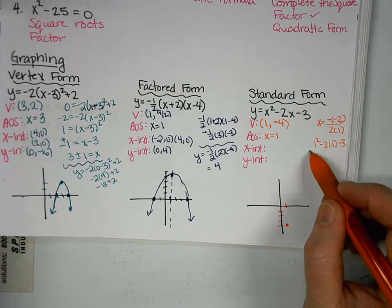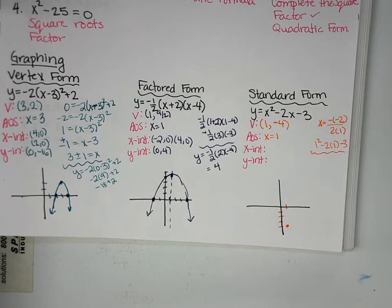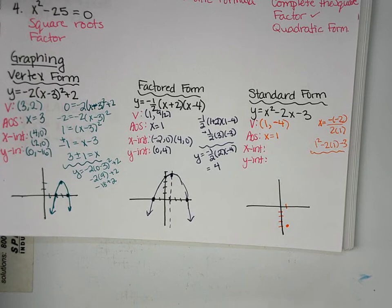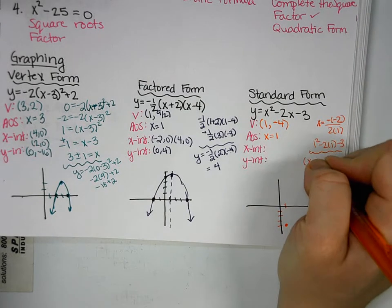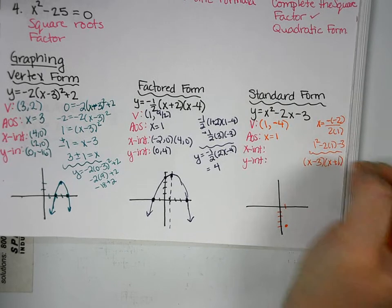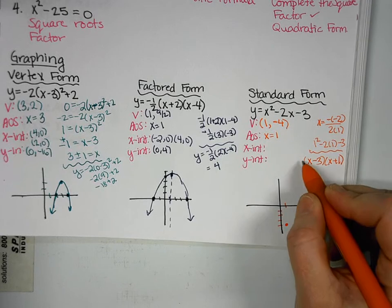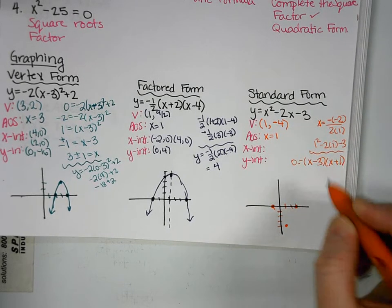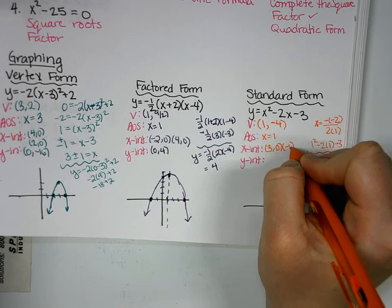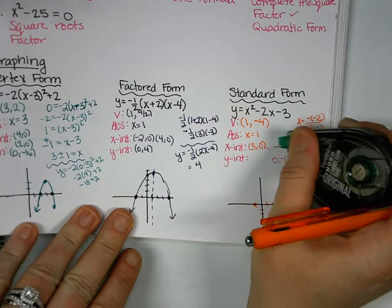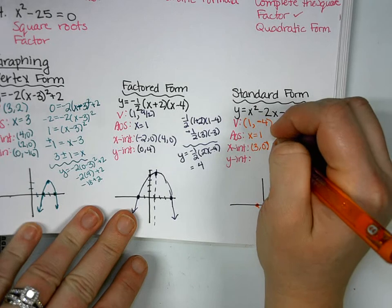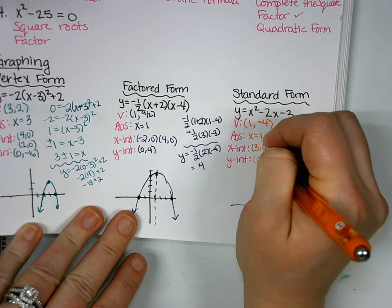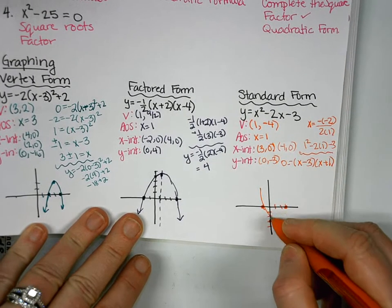Now for the x-intercepts, this is where we choose our method because it's up to us. We could factor it. We could complete the square. Quadratic formula. So which one do you want to do here? Factor, complete the square, or quadratic formula? Factor. Okay, so this one is factorable. x minus 3 times x plus 1. So what would our x-intercepts be? 3 and negative 1. So negative 1 and 3. And what's our y-intercept? Negative 3. Because standard form quickly tells us that, so we don't have to do any additional work for that. So I can go ahead and plot that as well. Connect the dots. And we have our graph.